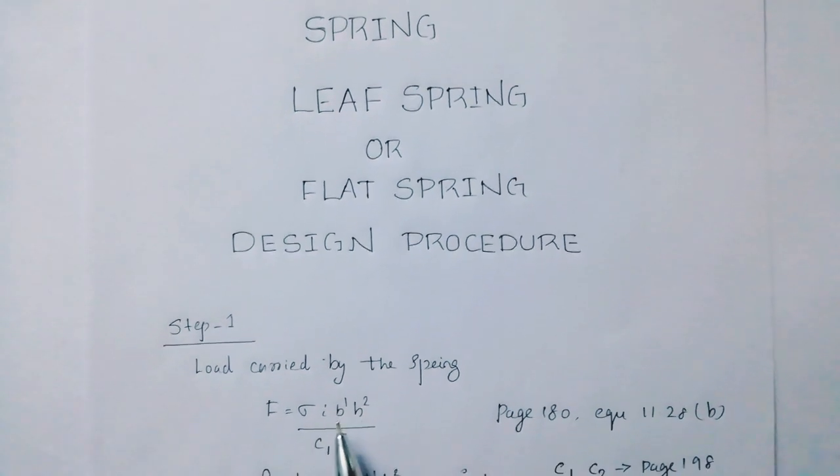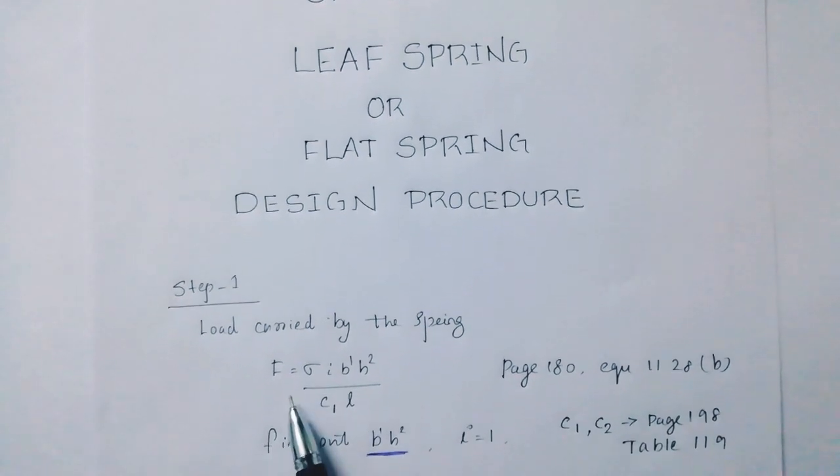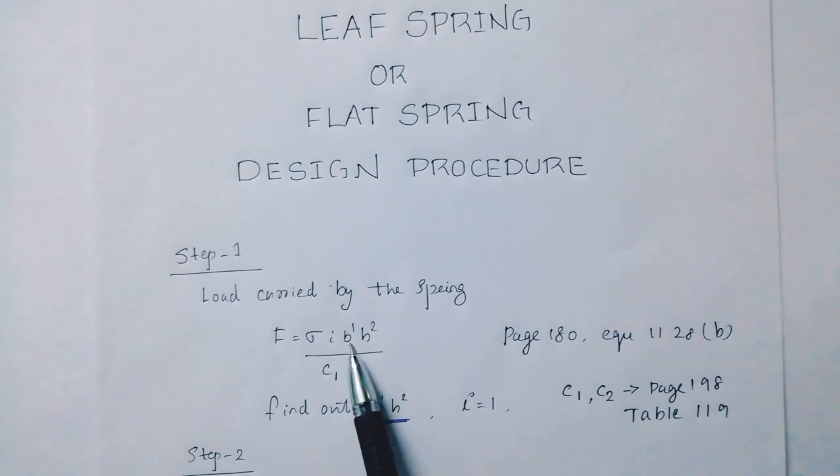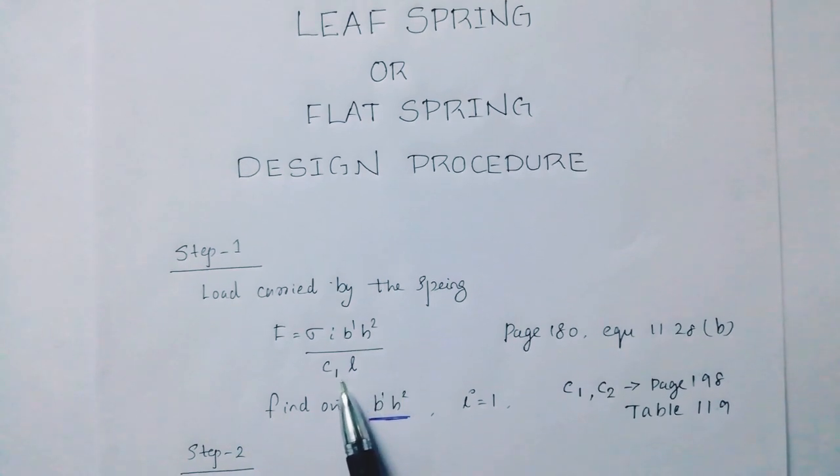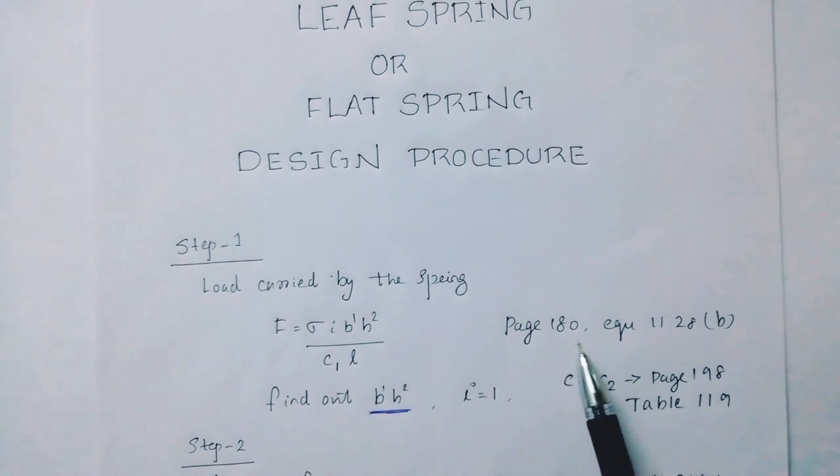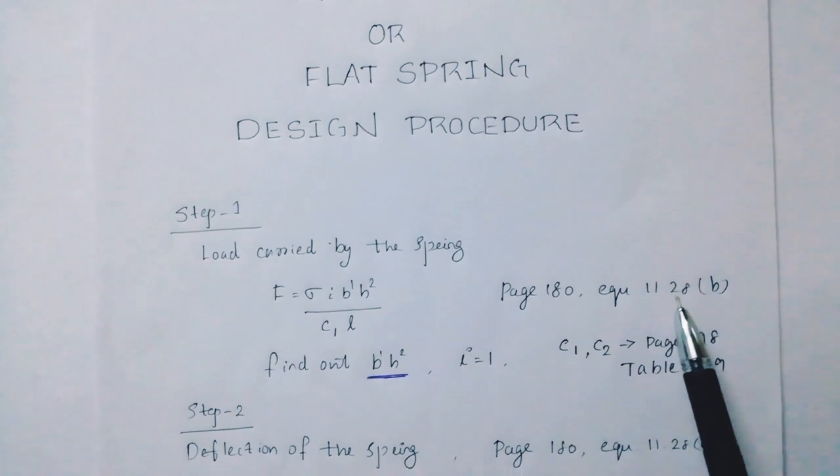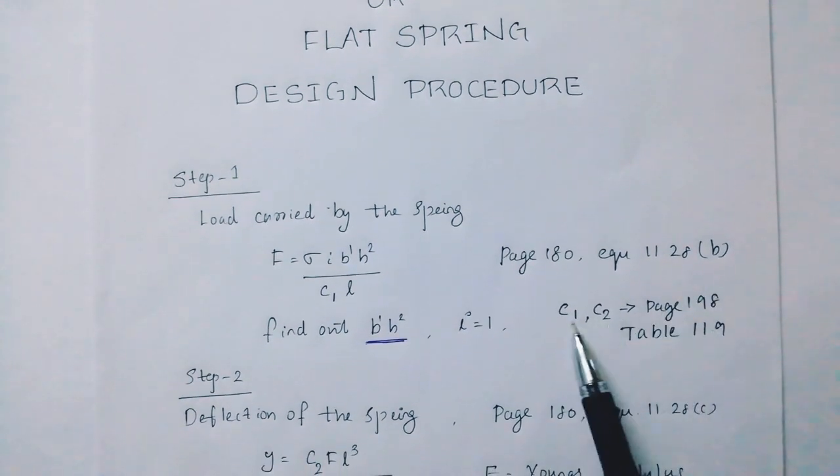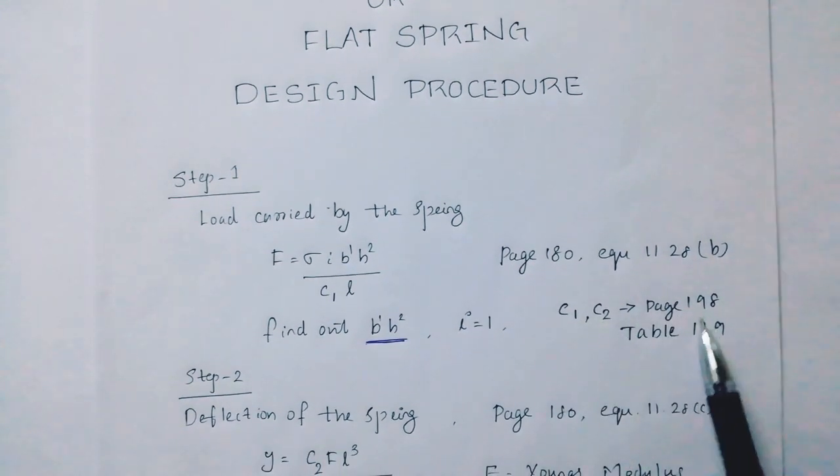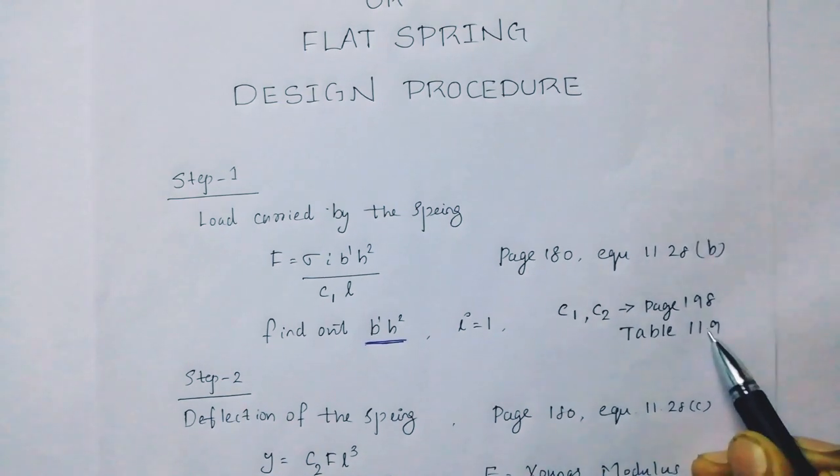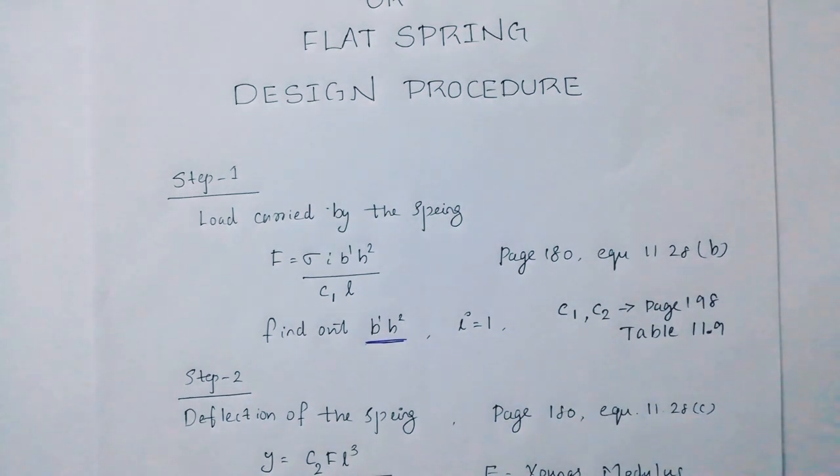Then, load carried by the spring. Then, f equals sigma into i into b dash into h square divided by c1. Then, page number 180 equation 11.28b. Then, c1 c2 number, page number 180 table 11.9, find out b dash h square.